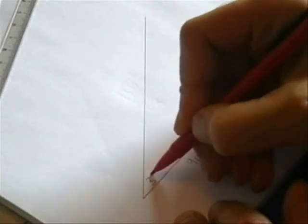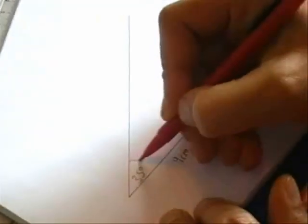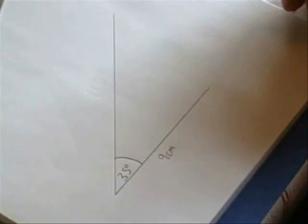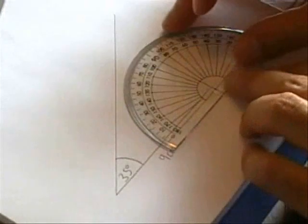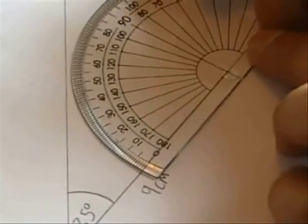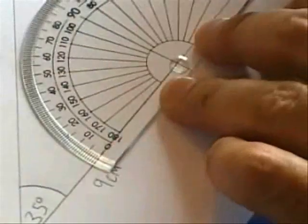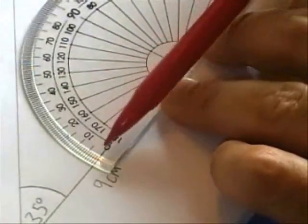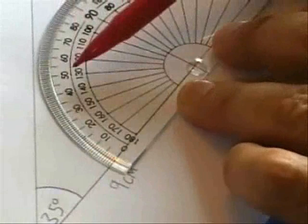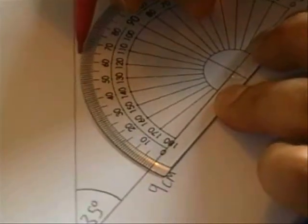And I'll label this as 35 degrees. The other angle that I'm going to have is 65 degrees. So again, lining up my crosshairs, making sure that it goes through zero, and this time I'm looking at the outside scale: 0, 50, 60, 65.